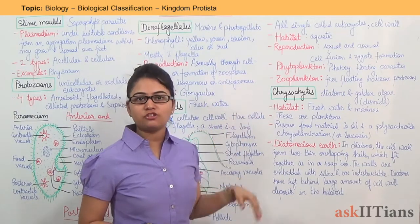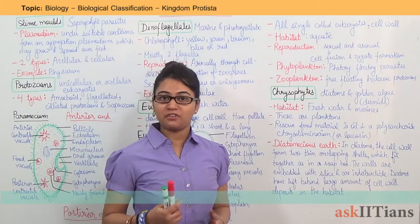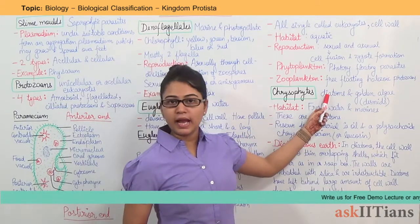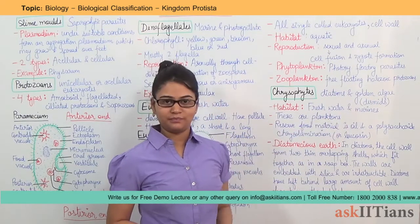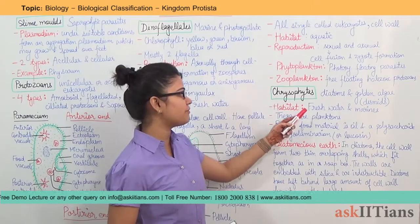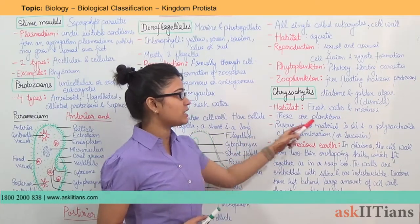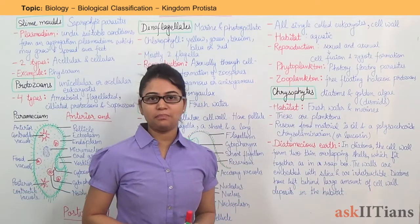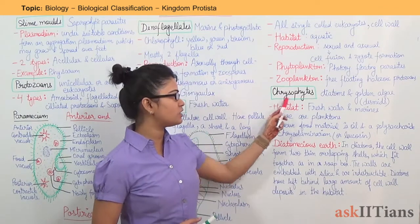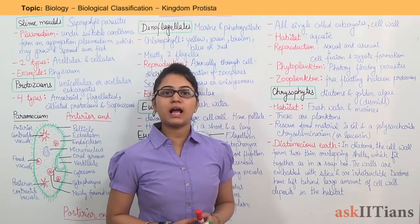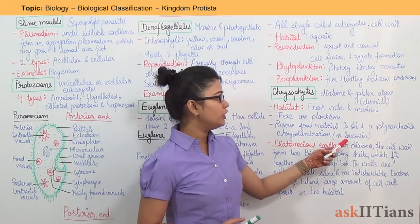Moving on to the classification under Kingdom Protista — it's chrysophytes. Chrysophytes are diatoms and golden algae. Golden algae is also known as desmids. Chrysophytes are found in fresh water and marine environments. They are planktons. The reserve food material in case of chrysophytes is oil and a polysaccharide known as chrysolaminarin, also called leucosin.